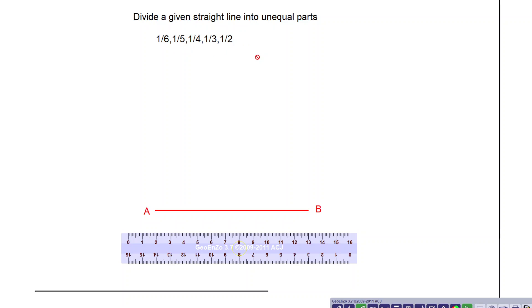You already have learned how to divide a line into equal parts. So if you have not gone through that part, then you can see different videos where I have given how to divide a line into equal parts. Now we will try to learn how to divide a line into unequal parts, like 1 upon 6, 1 upon 5, 1 upon 4, 1 upon 3.